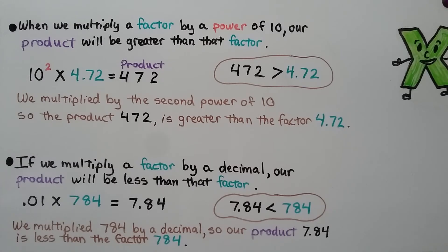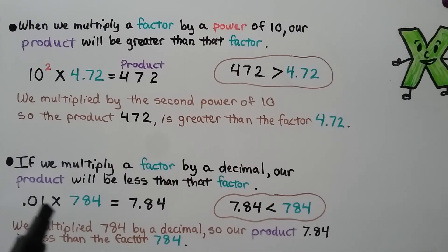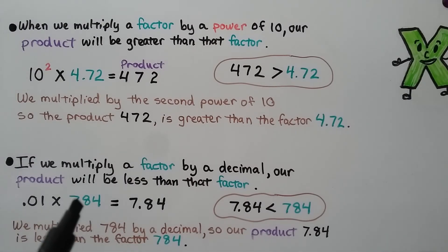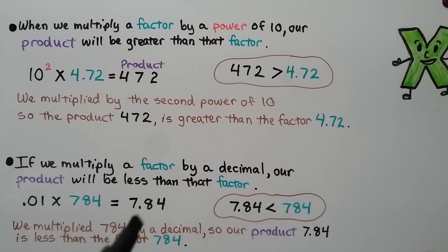If we multiply a factor by a decimal, our product will be less than that factor. So, we have seven hundred eighty-four as our factor and we're multiplying it by a hundredth. Our product is going to be smaller, less than seven hundred eighty-four. We're going to move two decimal hops to the left — one, two — it'll be in between the seven and the eight. We'll have seven and eighty-four hundredths.